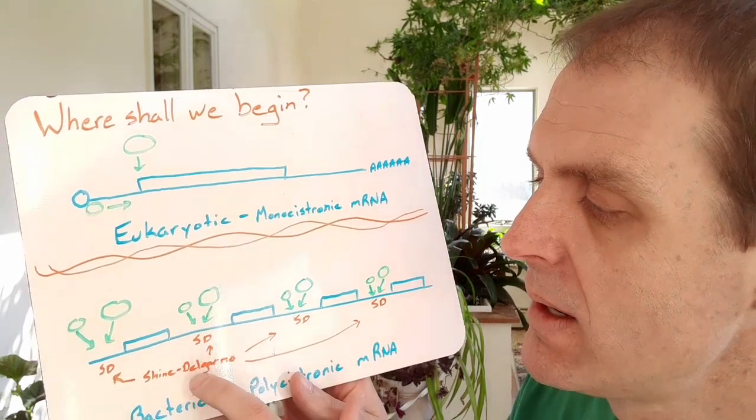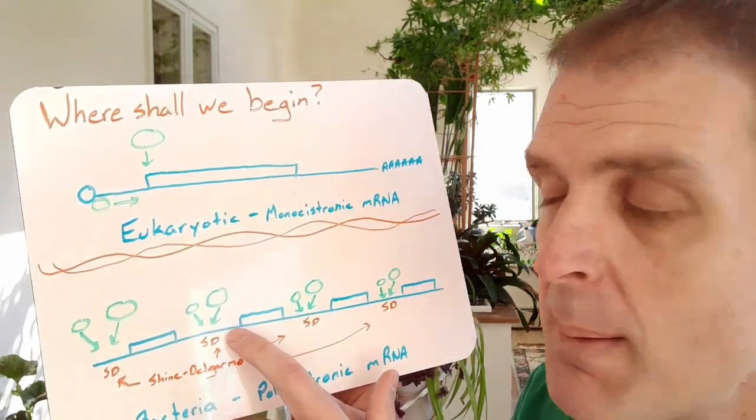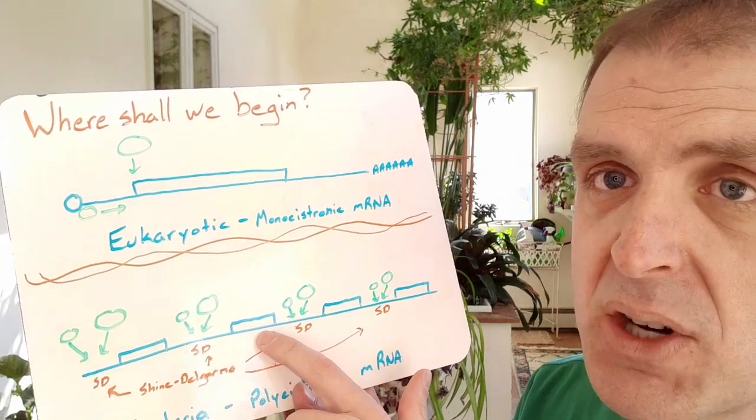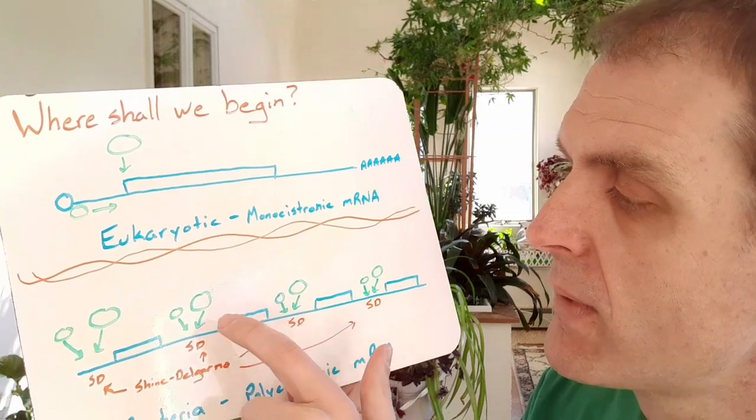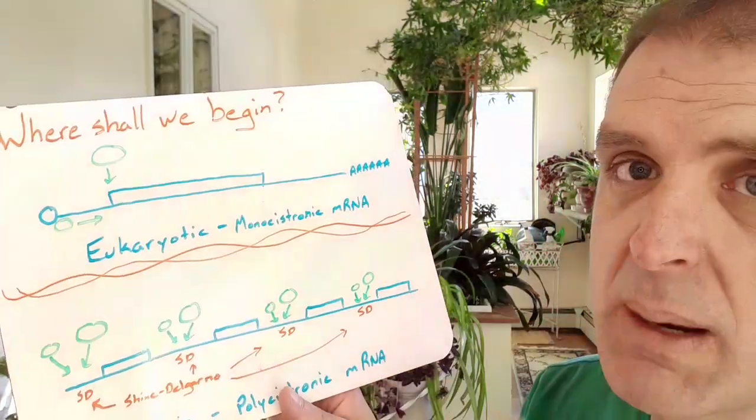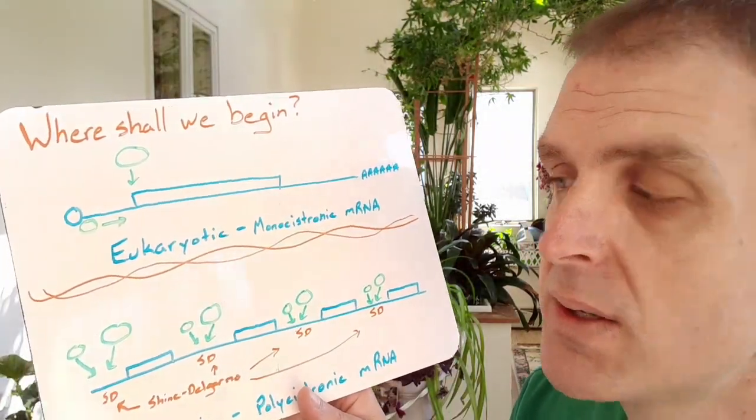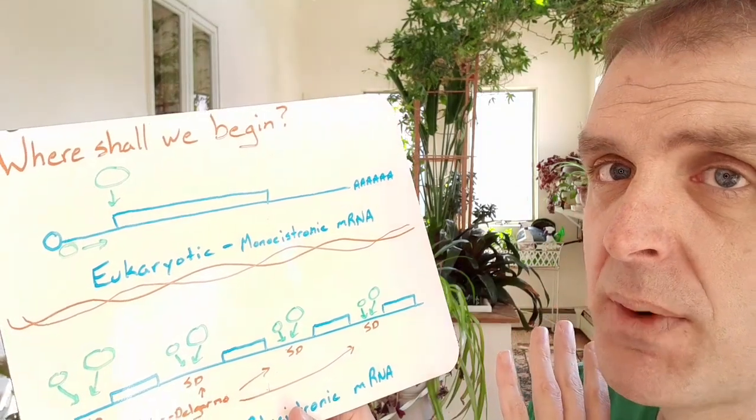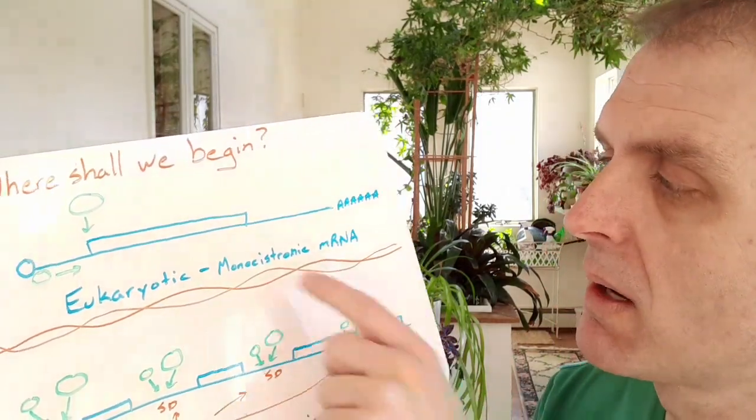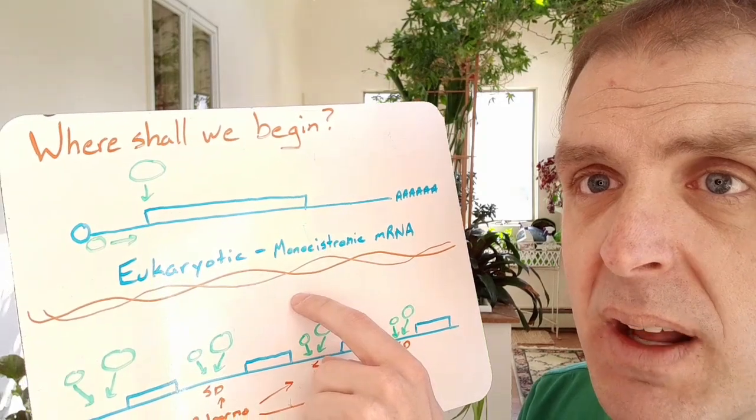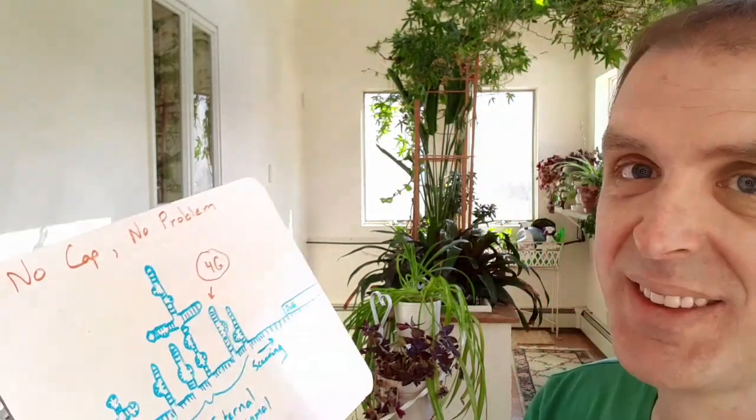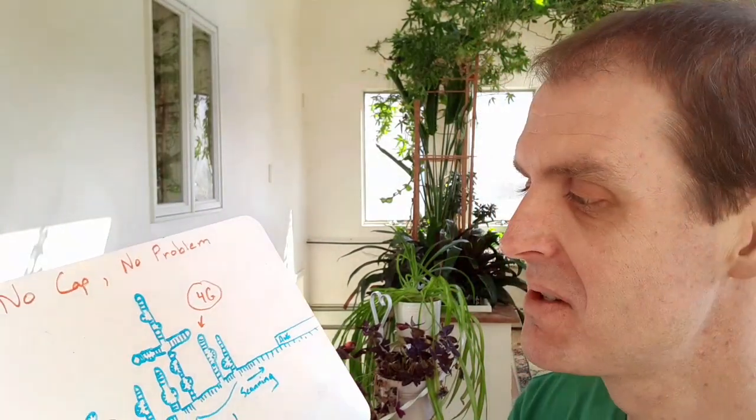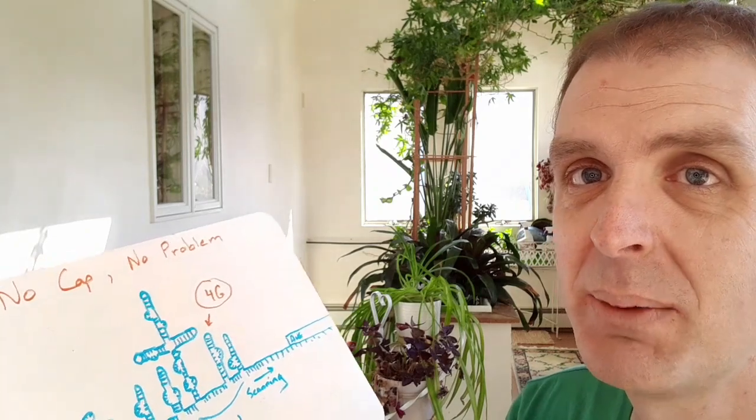Now Shine-Delgarno sequences recruit in those ribosomes and then the ribosomes can translate. So right before each protein coding sequence you've got Shine-Delgarno and that brings in the translation machinery so you can get multiple proteins from a single RNA that's polycistronic, whereas most eukaryotic RNAs are monocistronic. Eukaryotic I mean human again, there's a lot of variety in biology so there's exceptions to every rule that I'll tell you.